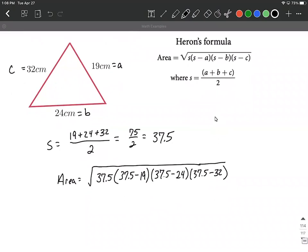Let's do a little bit of reducing down before we punch it into the calculator. Make sure we're all on the same page. So 37.5 minus 19 is going to be 18.5, minus 24 is going to be 13.5, and minus 32 is going to be 5.5.